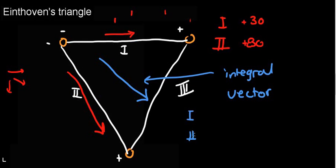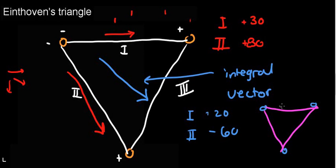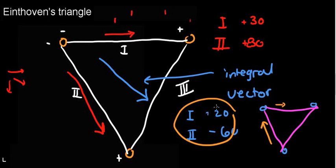If you have this one lead and this second lead, and my Eindhoven Triangle reads plus 20 and negative 60, you can just imagine building this triangle. Plus 20 is going to be something along these lines, and maybe minus 60 is going to be something along these lines. What is the integral vector in this instance? You can just add them up and get something along these lines.